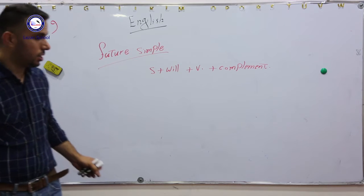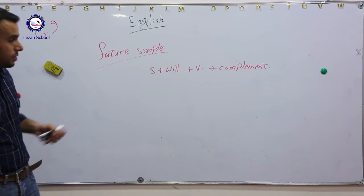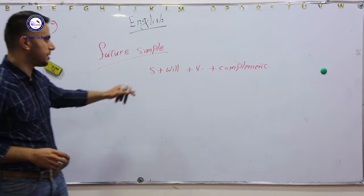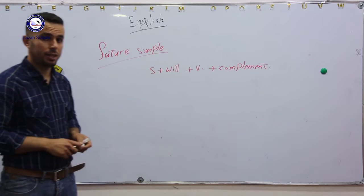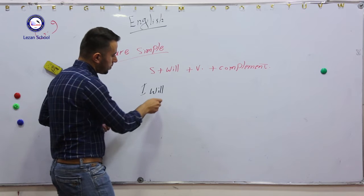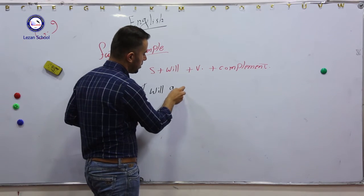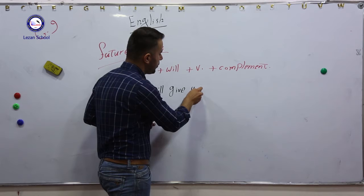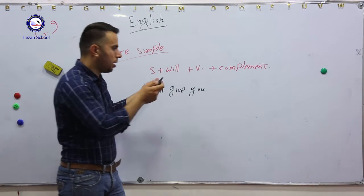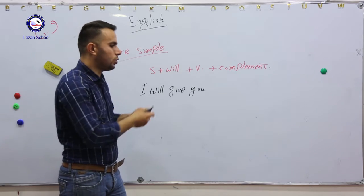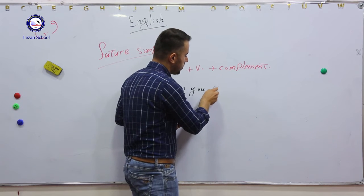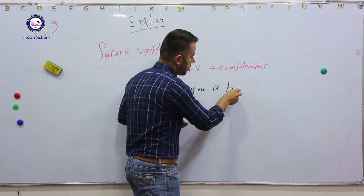The first grammar section on page number 46 is Future Simple. We have covered the rule for future simple: subject plus will plus verb plus complement. And let's give you an example. I will give you a book.